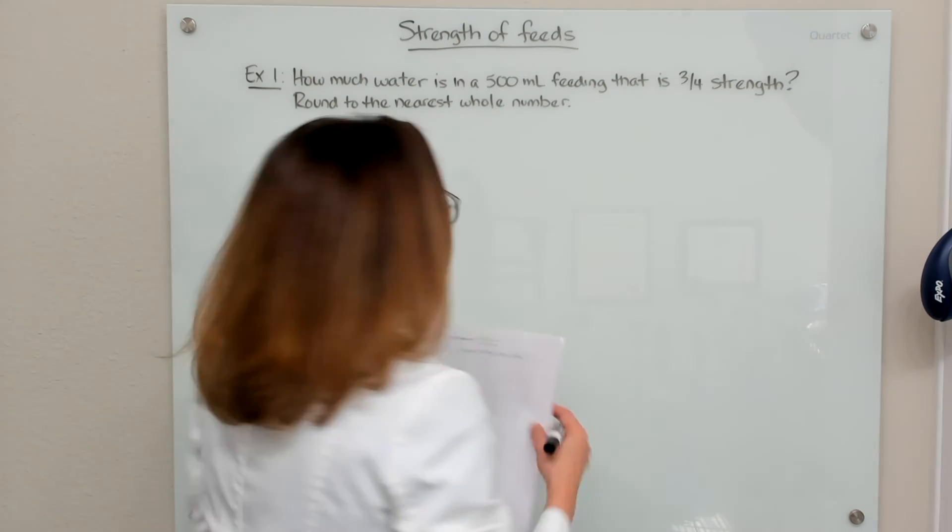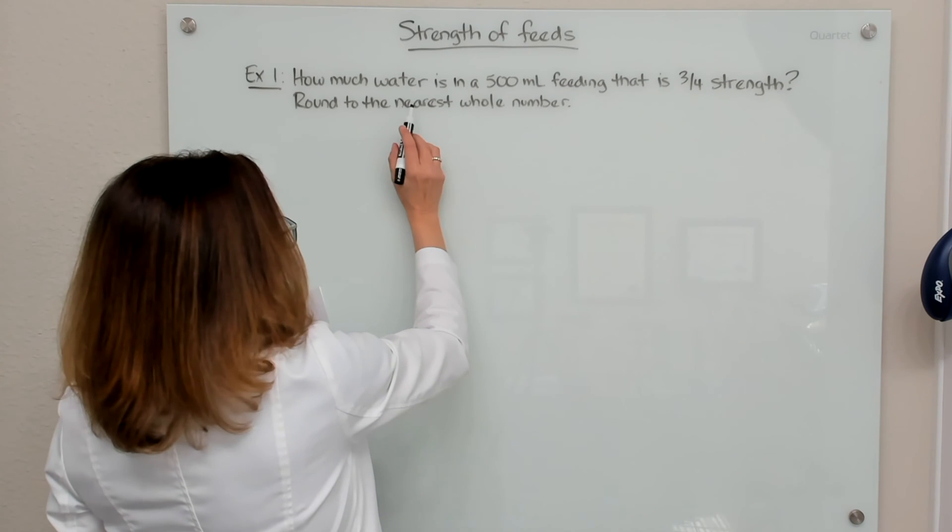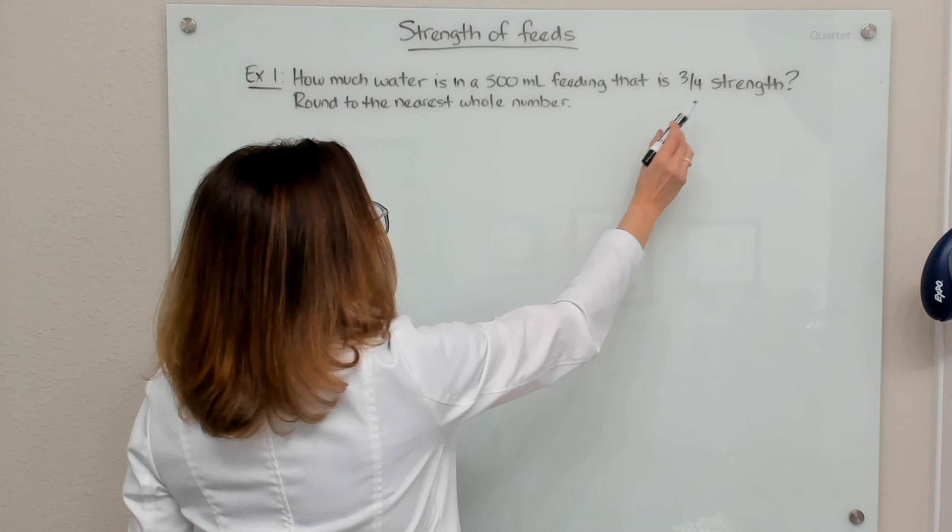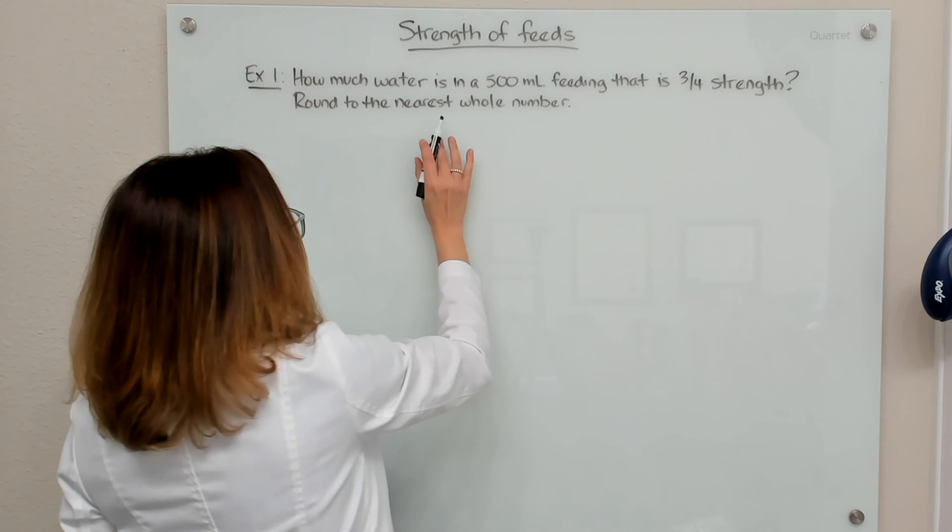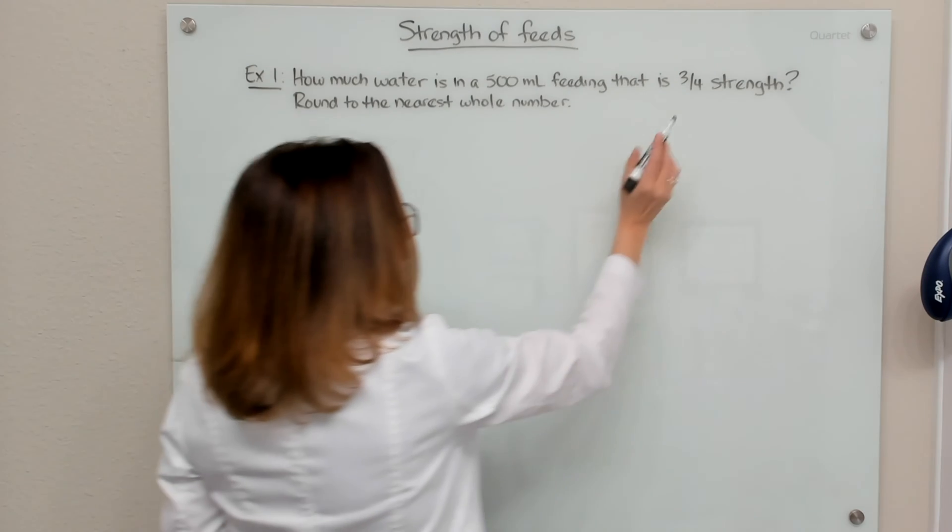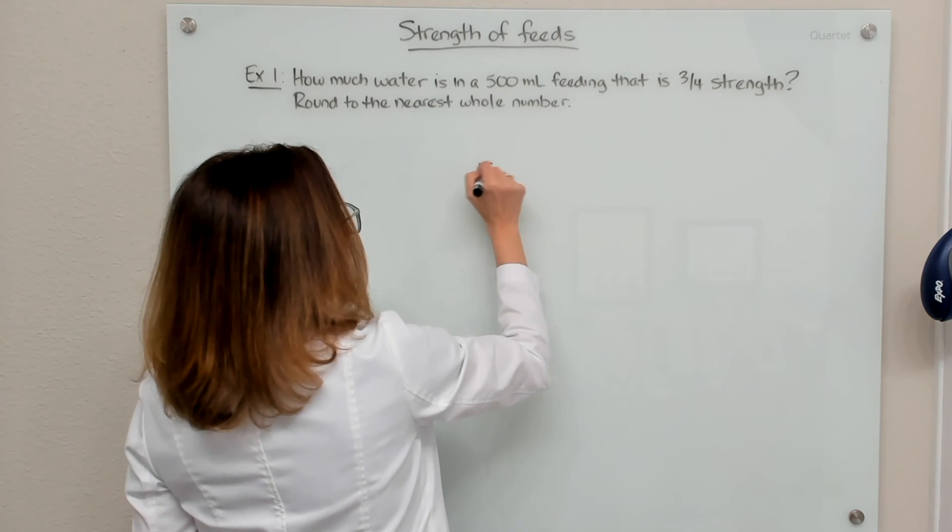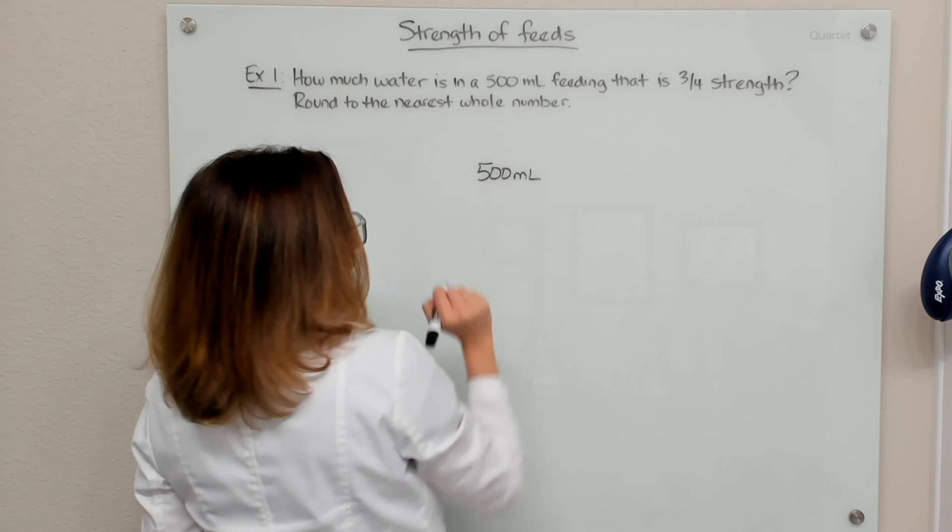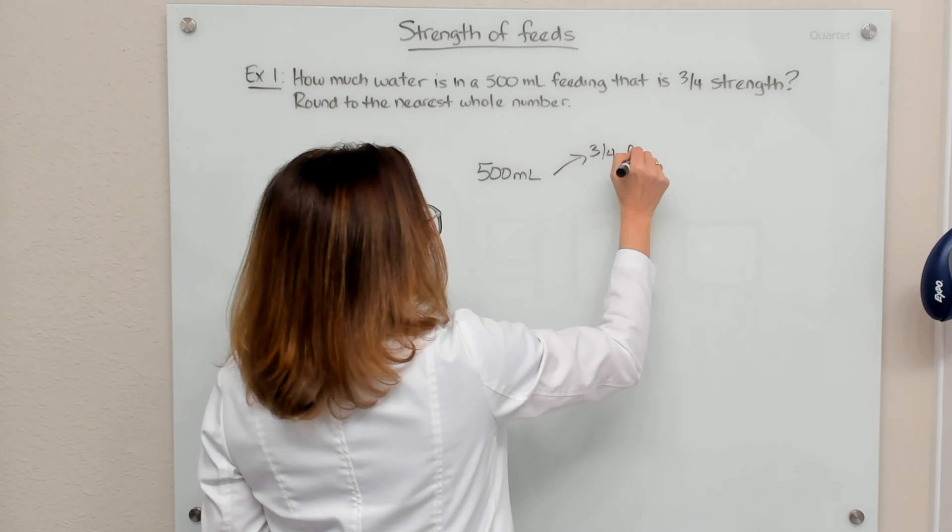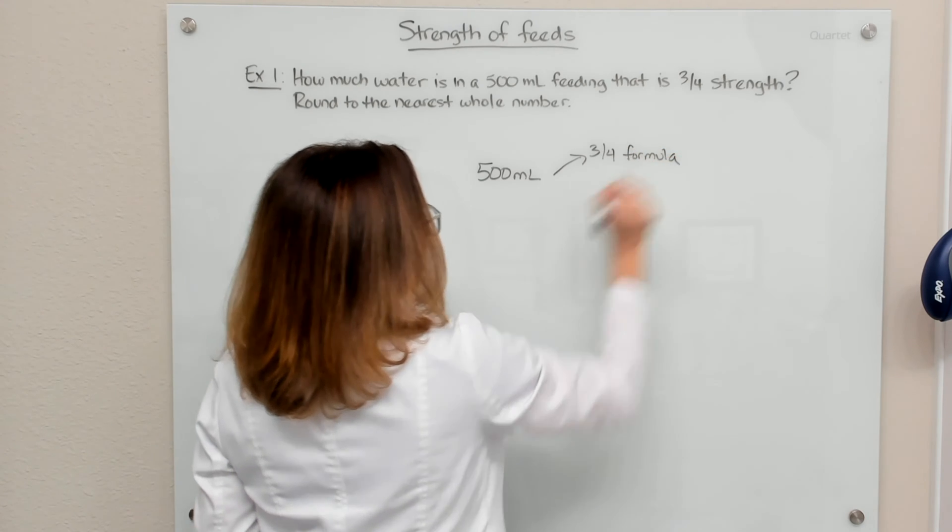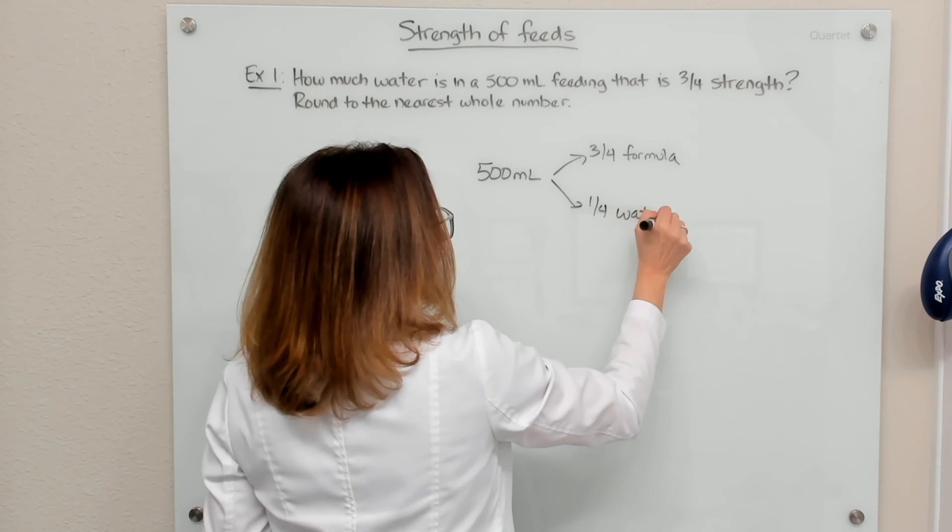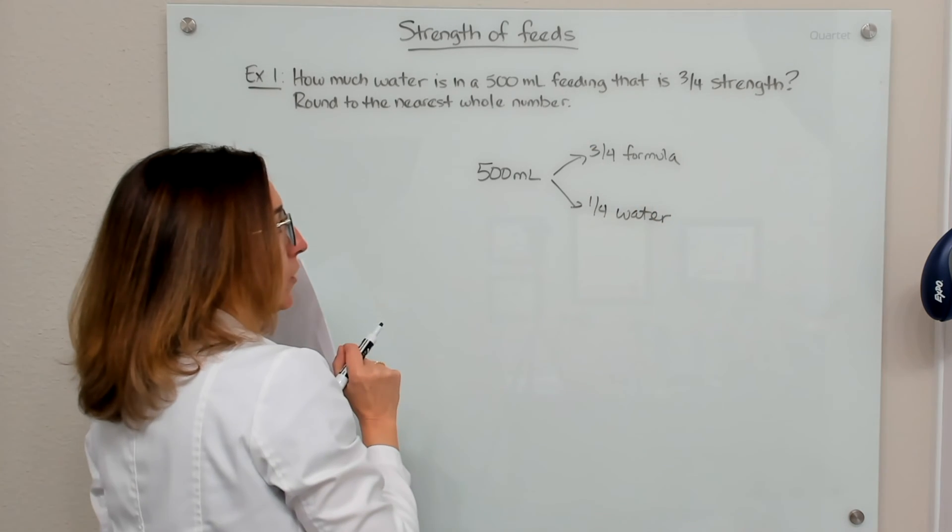So in this first example, we are being asked how much water is in a 500 ml feeding that is three quarters strength. And we need to round our answer to the nearest whole number. So when we say three quarters strength, that means in this 500 ml feeding, three quarters of it is comprised of formula. And the other quarter is water.